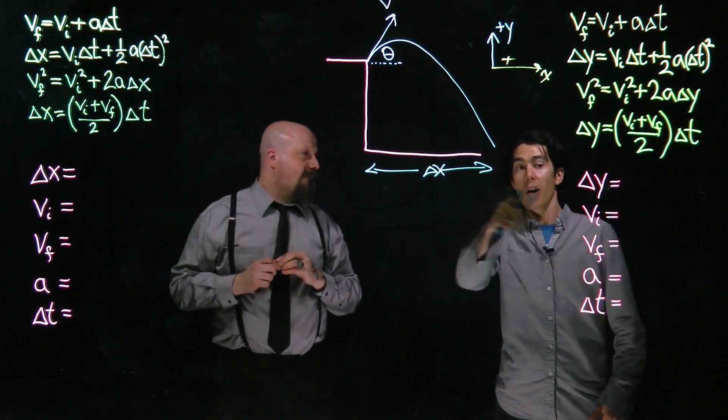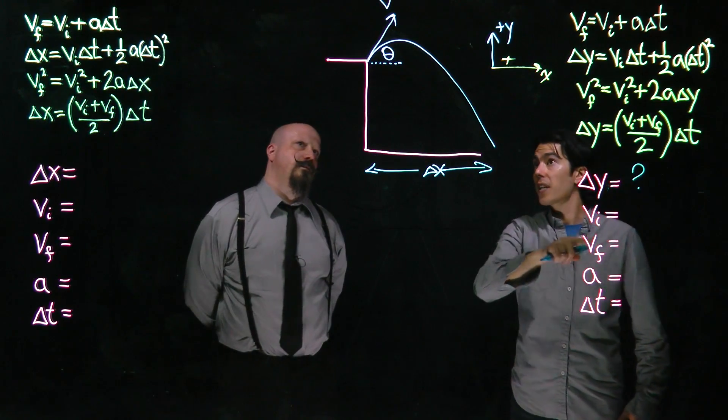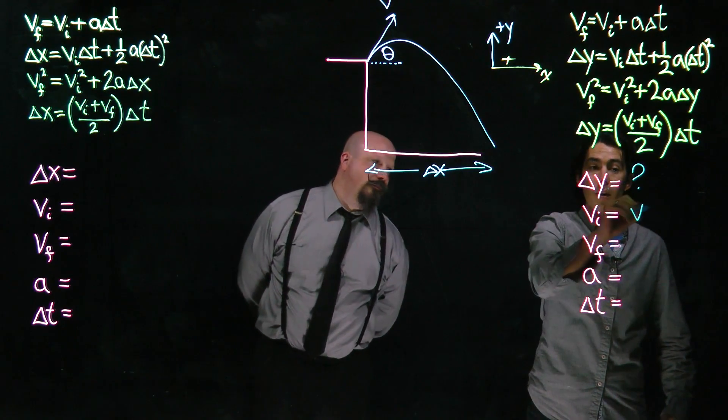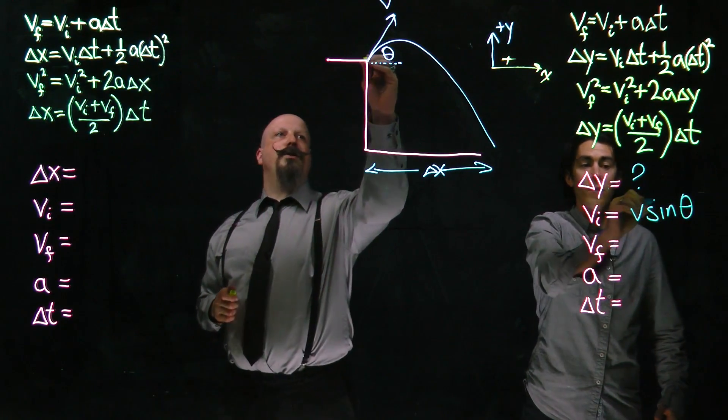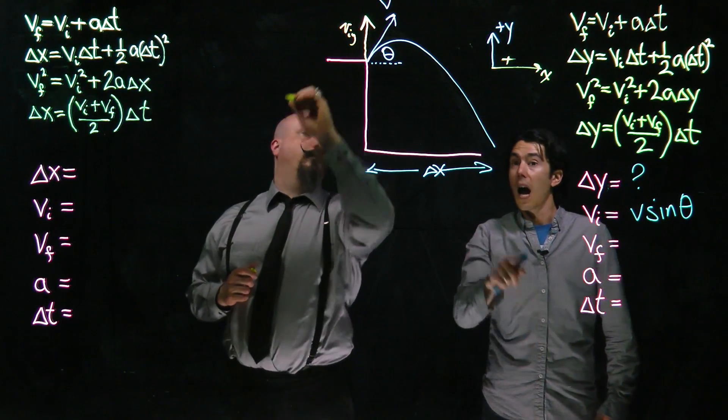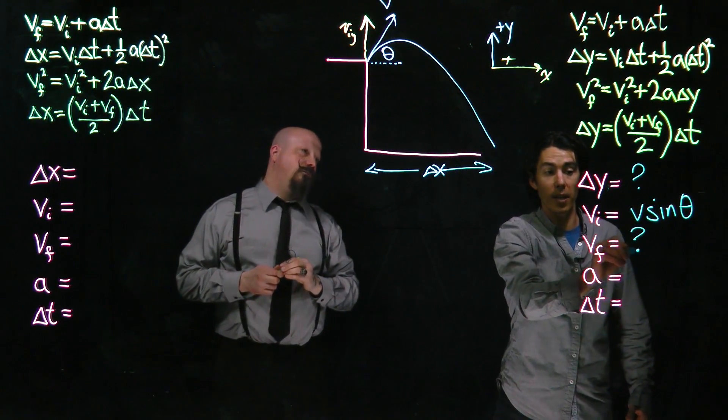So why don't I start? We don't know the height of the cliff. We don't know how far the object falls, but we do know the initial velocity in the vertical direction. Now, that's just going to be v times sine theta. Right, just this component right here. Exactly, and so it's going to be a positive quantity. I have no idea what's going on down here, so the final vertical velocity is just going to be an unknown.